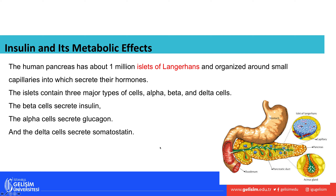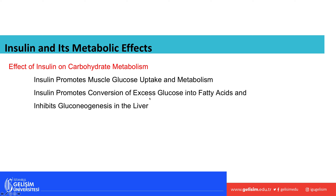The three main hormones discussed in the previous lecture were insulin, glucagon, and somatostatin. Insulin affects carbohydrate metabolism — it allows cells such as muscle cells to bring in glucose and convert it to ATP. Insulin also promotes the conversion of extra glucose into fatty acids and inhibits gluconeogenesis, the production of glucose from proteins, in the liver.